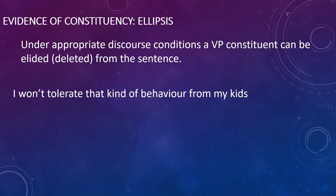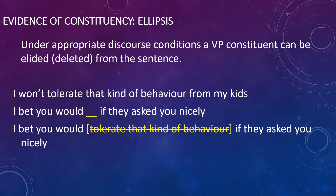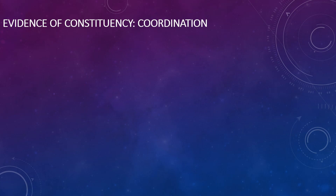Evidence of constituency using ellipsis. Sometimes when you're speaking, it is possible to elide a constituent or chunk of words from the sentence — the word 'elide' simply means delete. For instance, if we take the sentence 'I won't tolerate that kind of behavior from my kids,' someone might retort 'I bet you would.' Anyone who speaks English knows that what is actually meant is 'I bet you would tolerate that kind of behavior from your kids.' The phrase has been elided. If we assume only constituents can be deleted, then this kind of deletion behavior can give you a clue that there might be constituents involved. This is very similar to the sentence fragment test discussed earlier.